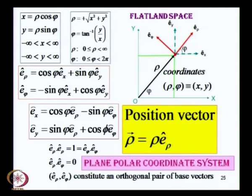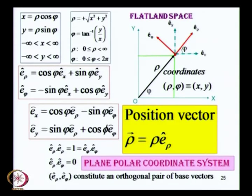The position vector is rho times e_rho — rho is the distance, giving both magnitude and direction. Remember, however, that e_rho and e_phi are not constant vectors; they will change from point to point. Therefore you want to know what law governs this change — how do you determine the changes in these quantities, and change with respect to what?